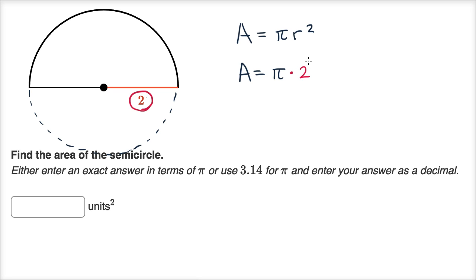Pi times two squared. Two squared is of course two times two, which is equal to four. So our area is going to be equal to four times pi.